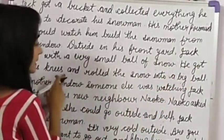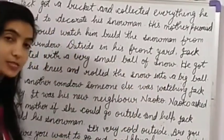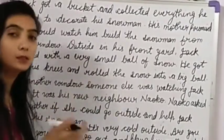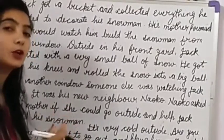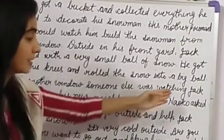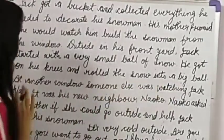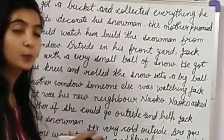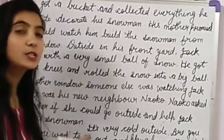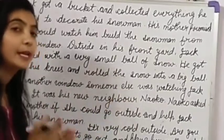He got on his knees and rolled the snow into a big ball. He kept rolling and rolling, and the very small ball grew into a very big ball. At another window, someone else was watching Jack play. It was his new neighbor, Naoko.